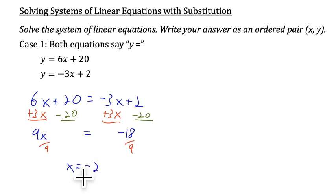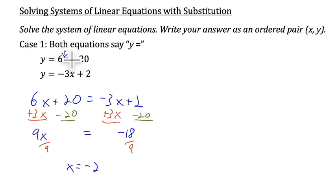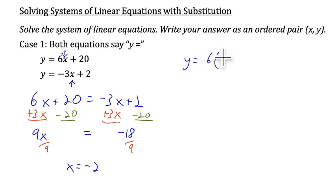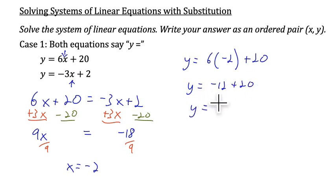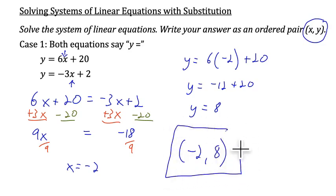We are only half done because we have solved for x, but we also need to solve for y. We can take this value for x and substitute it back into either equation. The first equation does not have a negative sign, so let's use that one. We get y equals 6 times negative 2 plus 20, which gives y equals negative 12 plus 20, or y equals 8. Our solution written as an ordered pair is negative 2, 8.